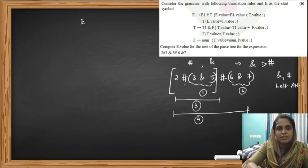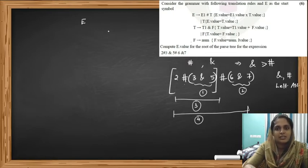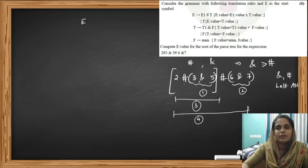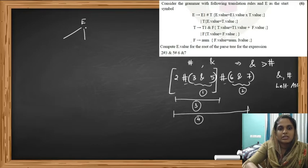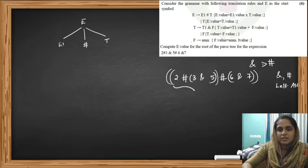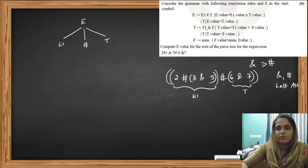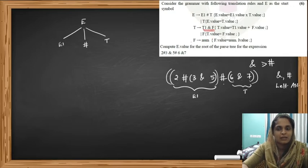Let's draw our parse tree. We always start from the start symbol E. E has two productions: E hash T and T alone. Since we need two hash symbols, we choose E produces E hash T. The right-hand T should be converted to 6 ampersand 7, so we use T produces T1 ampersand F.